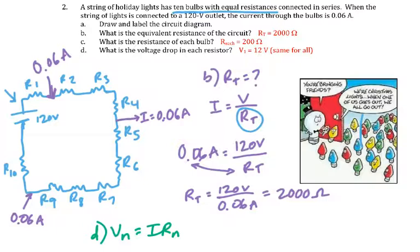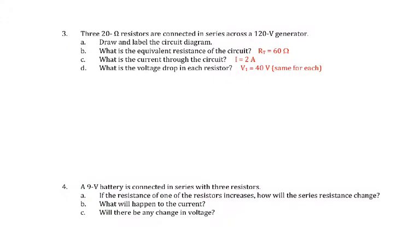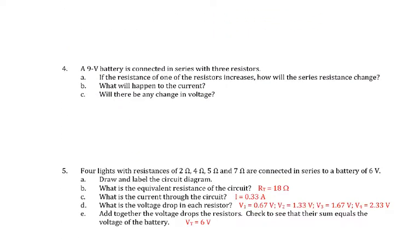The last thing to look at is on the back. Number four has more conceptual questions. My hint to you is to use the equations to help you figure out the answers. For example, if the resistance of one of the resistors increases, how will the series resistance change? Series resistance is RT, so think about the RT equation. If you increase one of the R1 or R2 in that equation, what will happen to the answer?